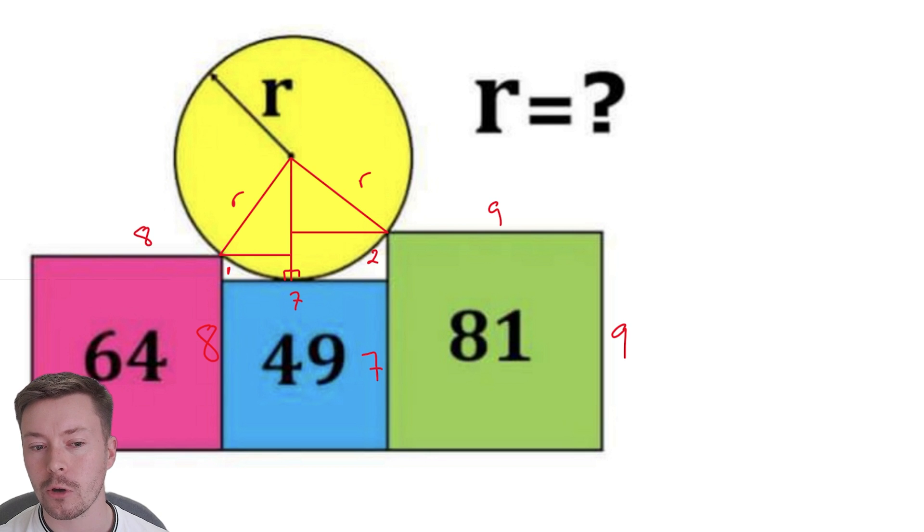And then if we have a look at what would be therefore the height of the triangles, well we've got a radius and then we're going to subtract these two individual heights. So we're going to get r minus 1 and r minus 2. So we've got two sides of both triangles in terms of r.